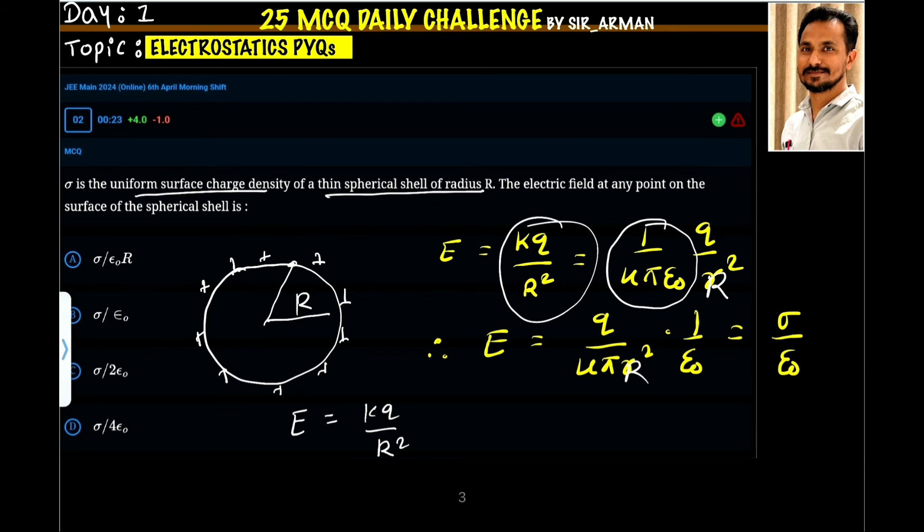By epsilon naught. So which option is here? This option number B is sigma by epsilon naught.